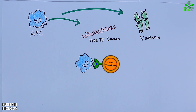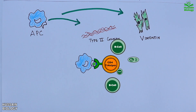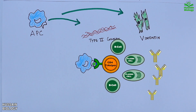The activated CD4 T cells stimulate B cells and drive their proliferation, as shown in the animation. These B cells then differentiate into plasma cells, which generate antibodies against the self-antigens — also called autoantibodies.